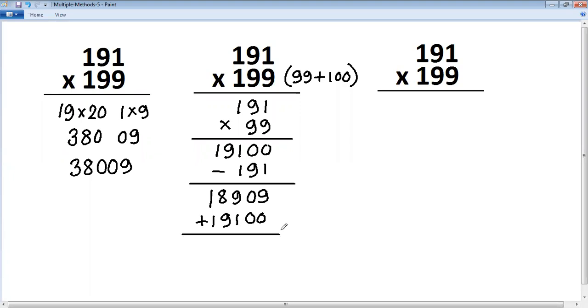So add this. 9 plus 0, 9 plus 1 is 10 so carry 1, 8 plus 9 is 17 plus 1 is 18 carry 1, 1 plus 1 plus 1 plus 1 is 3. 38009, same answer.